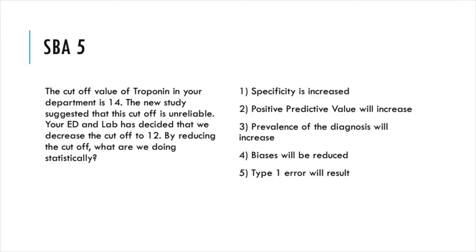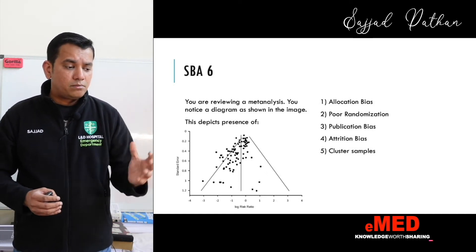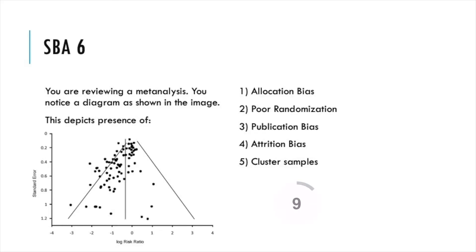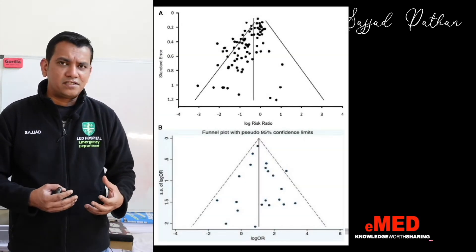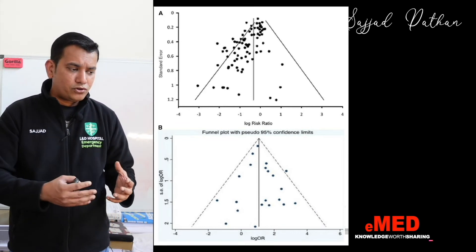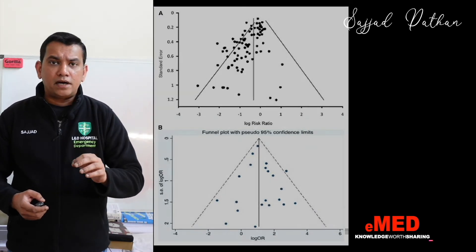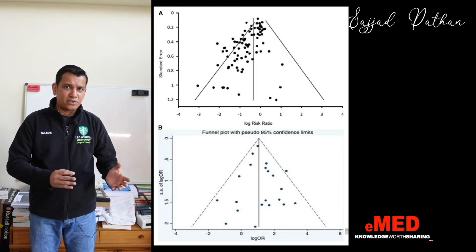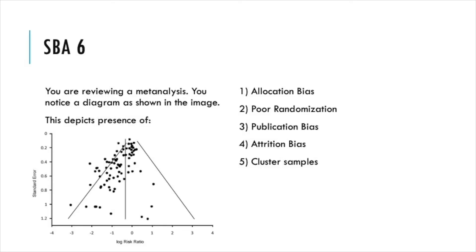Question six: you are reviewing a meta-analysis and notice a diagram as shown in this image. This depicts: presence of allocation bias, poor randomization, publication bias, attrition bias, or cluster samples? This graph is called a funnel plot. The funnel plot is used before analysis begins — results should be equally distributed along the central line. When results are clustered on one side, there is obviously a publication bias. That is the answer.